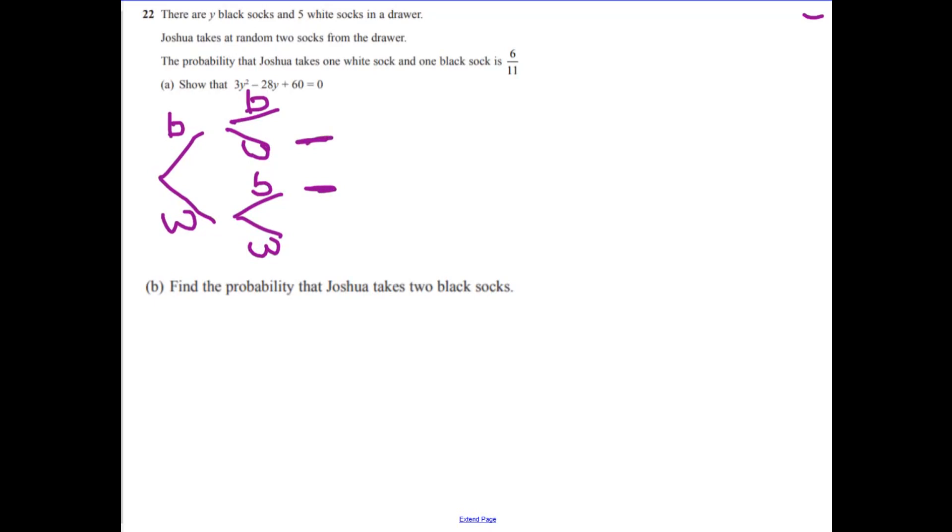Now we need to think about how we actually work out those two branches. Annoyingly, it hasn't told me how many black socks there are. It says they're y, just to be awkward. So the probability of getting a black sock initially will be, well, there are y black socks. How many socks are there altogether? There are y plus five.